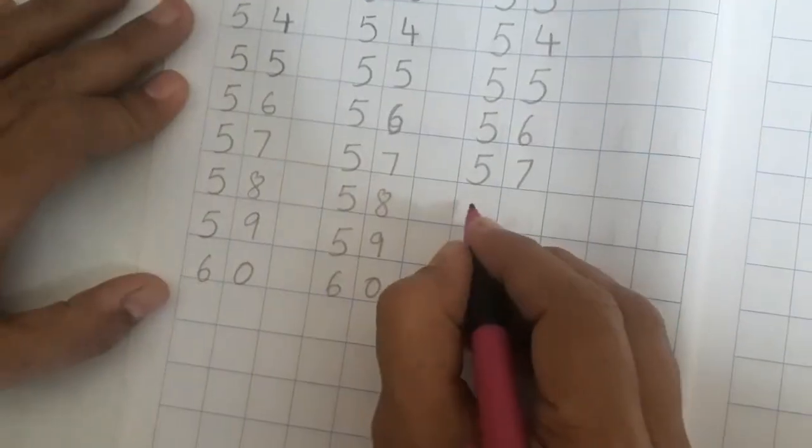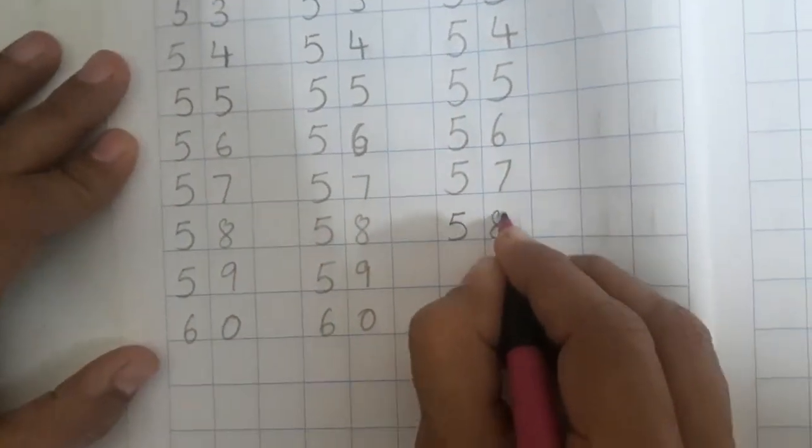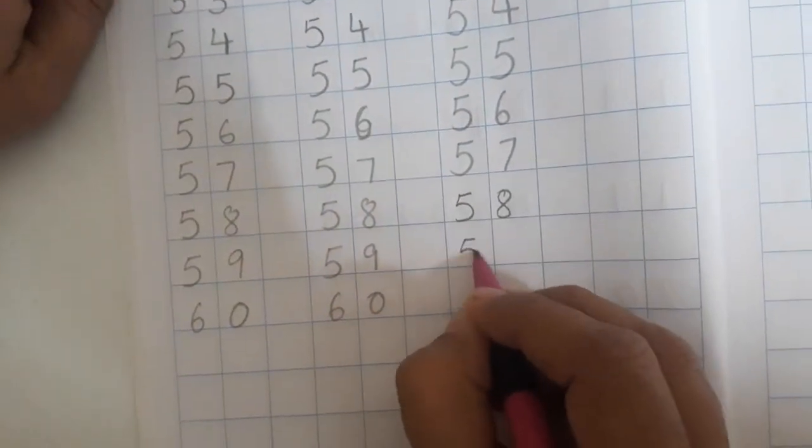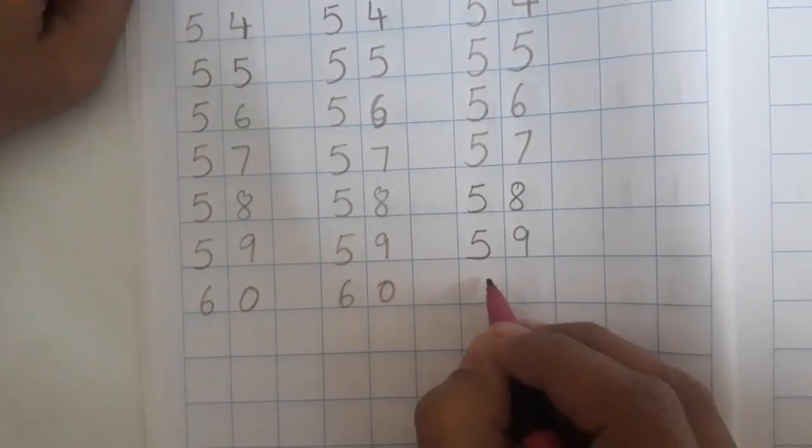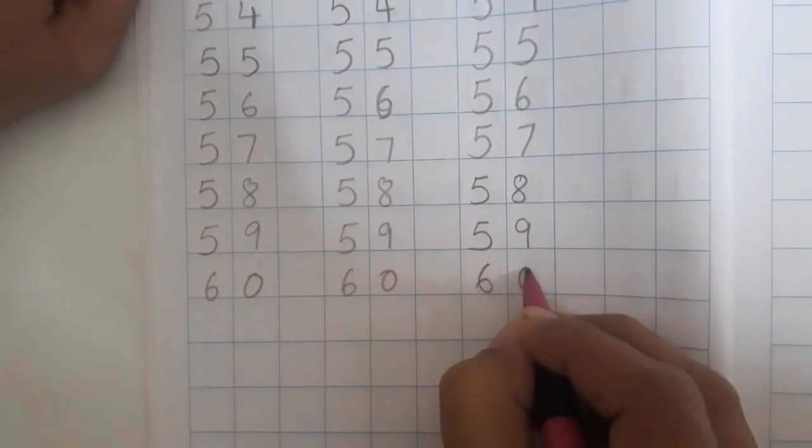5, 7, 57. 5, 8, 58. 5, 9, 59. And 6, 0, 60.